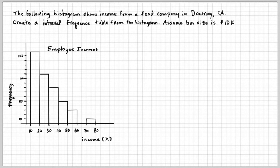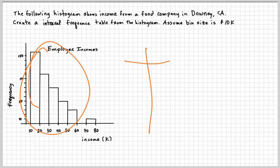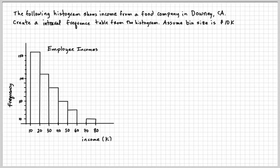In this video, we're going to take a histogram and then do an interval frequency table. Usually, you have a frequency table or an interval frequency table and you do the histogram, but you can go the other way as well. So here, this is a histogram of incomes from a food company in Downey, California.